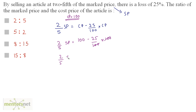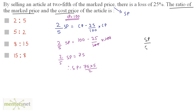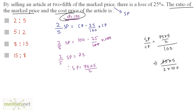Assuming cost price = 100, we get (2/5) × SP = 75, so SP = 75 × (5/2). The ratio of marked price (SP) to cost price is: [75 × (5/2)] / 100. Simplifying — 25×3 = 75 and 25×4 = 100 — gives 15/8. So the ratio is 15:8.